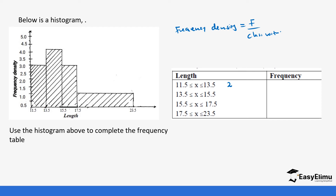Then 15.5 minus 13.5 gives us 2, and 17.5 minus 15.5 also gives us 2. Finally, 23.5 minus 17.5 gives us 6. So you can see they are not equal — the first three are equal but the last one is not. We are going to input our values in the table, and we'll call this column frequency density.